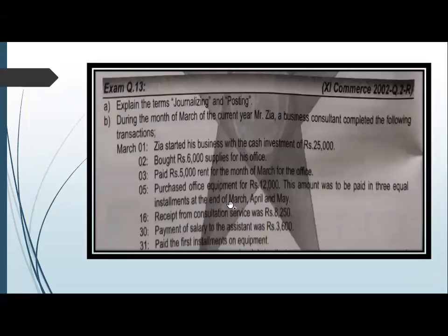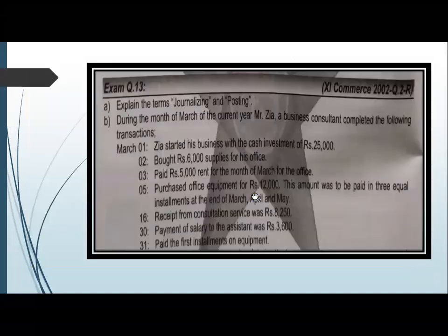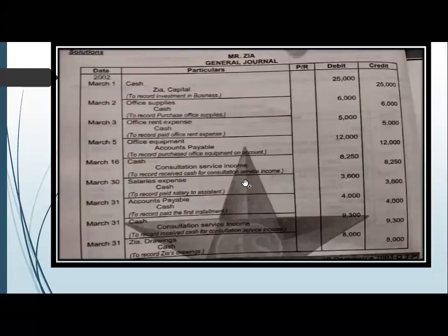We have done the general journal of this question. This question is: they started a business with cash investment. From an exam perspective, all the questions for which you have attempted the general journal — we will now form T-accounts for all those questions.